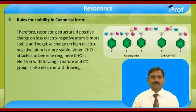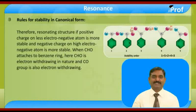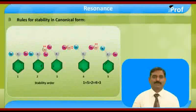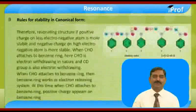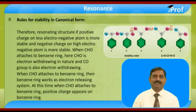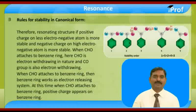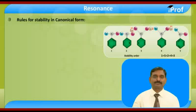When CHO attaches on a benzene ring, the CHO group is electron-withdrawing in nature — the CO group is electron-withdrawing. When CHO attaches on the benzene ring, the benzene ring works as an electron-releasing system. At this time, a positive charge appears on the benzene ring.